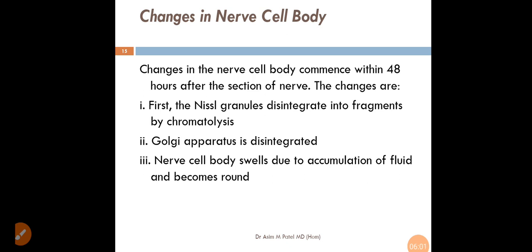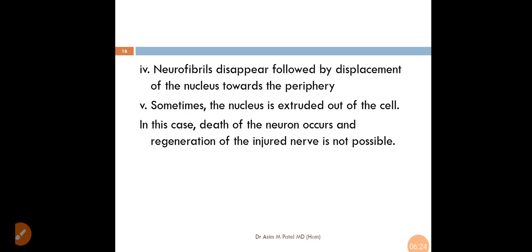The changes in the nerve cell body commence within 48 hours after the section of nerve. The changes are: the Nissl granules disintegrate into fragments by chromatolysis. Golgi apparatus is disintegrated. Nerve cell body swells due to accumulation of fluid and becomes round. Neurofibrils disappear followed by displacement of the nucleus towards the periphery.